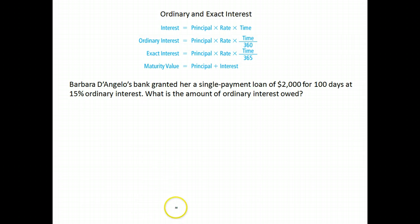All right, here's Barbara D'Angelo. Her bank granted her a single payment loan of $2,000 for 100 days at 15% ordinary interest. So here's our principal of $2,000. Our time is 100 days, and it's ordinary interest, so we're going to use the divide by 360. And our interest rate is 15%. What's the amount of ordinary interest owed?